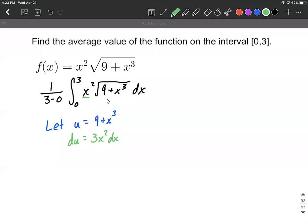Now we can replace the x squared and the dx, but we don't have a 3 to fill in for. So let's move the 3 to the other side. We can say 1/3 du is equal to x squared dx.